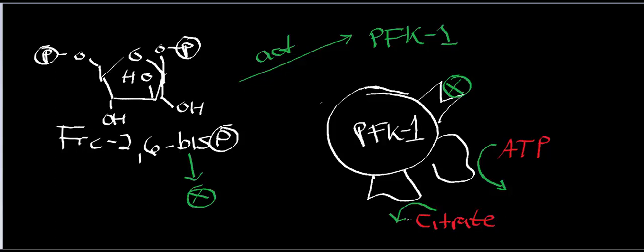Fructose 2,6-bisphosphate activates PFK1 and therefore activates glycolysis. If fructose 2,6-bisphosphate is not present, PFK1 is shut off. In order for PFK1 to function you essentially must have fructose 2,6-bisphosphate. If you remove it, PFK1 shuts down and you favor gluconeogenesis. So in the presence of fructose 2,6-bisphosphate, glycolysis is favored; in its absence, gluconeogenesis is favored. It is a very potent allosteric activator.